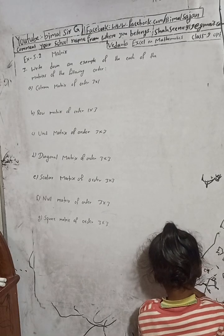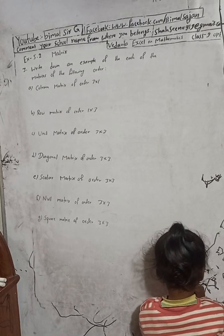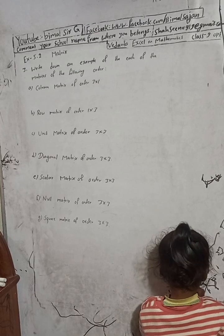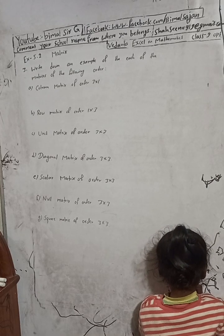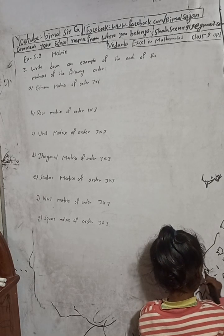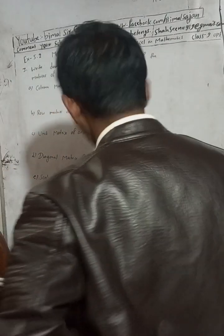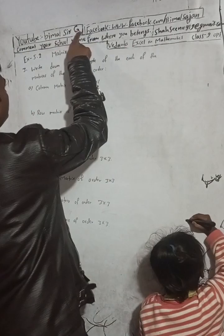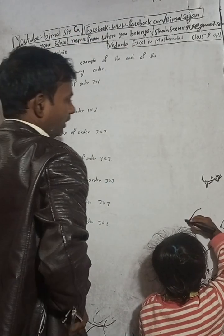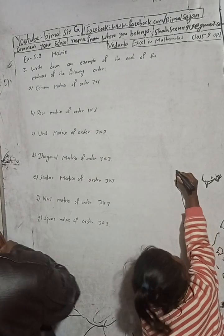Hi class 9 and 10 students, welcome back to Bimal Surge YouTube channel. This is question number 3, exercise 5.2, matrix chapter, Vedant Axial Mathematics class 9. Don't forget to check the Bimal Surge playlist — you will get a lot of solutions. And now the question is here.